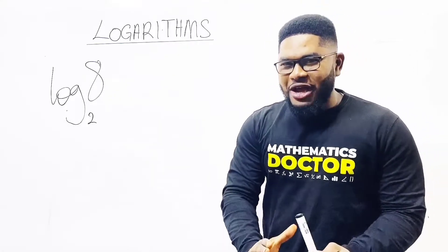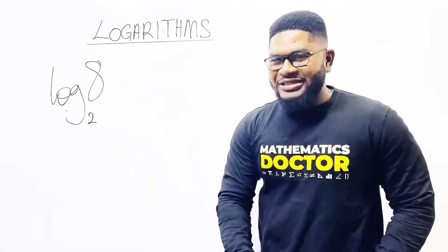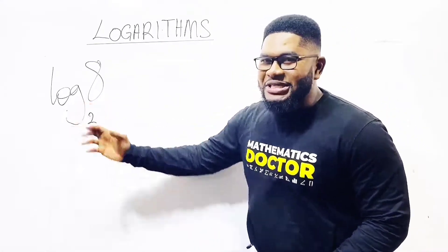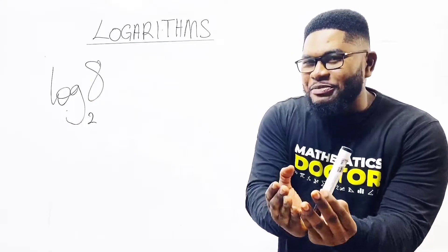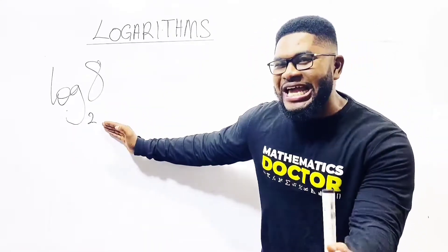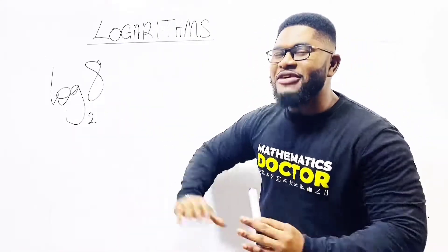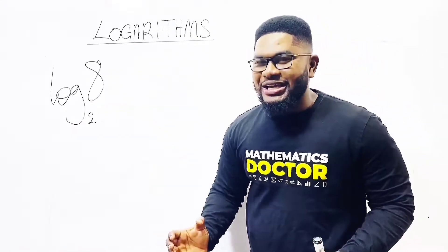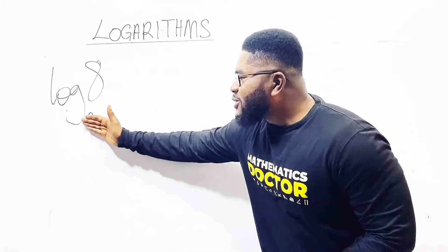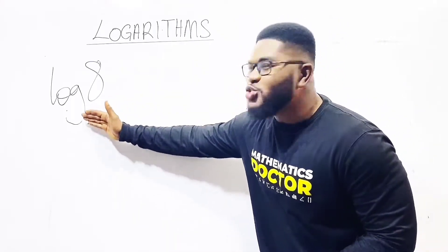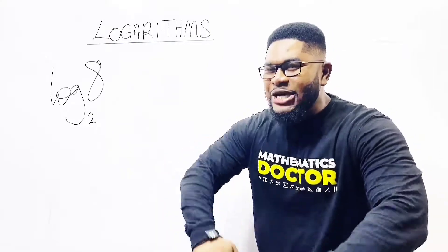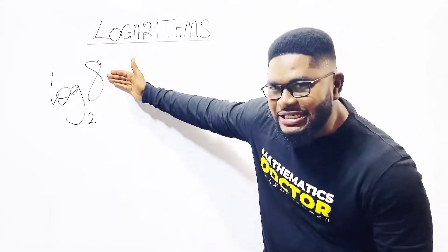Please, calm down and get the understanding. Once I see logarithm, something simple must happen here. The base must be the target to get the final answer. This is the meaning. How many times must base 2 multiply itself to produce the value of 8?